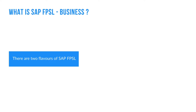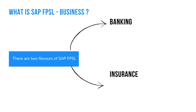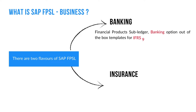There are two variants of SAP FPSL. One is for the banking industry and the other is for the insurance industry. If you are coming from a banking industry, then you should look at FPSL for banking, which has out-of-the-box support for IFRS 9 and US GAAP regulatory reporting.